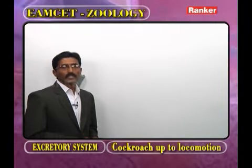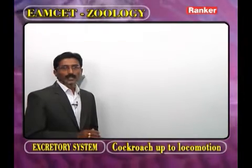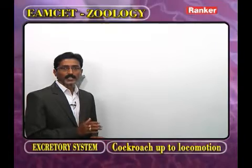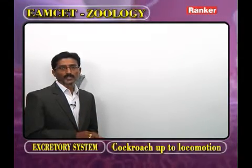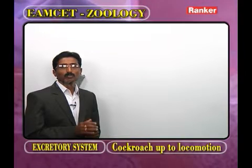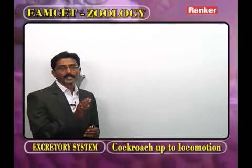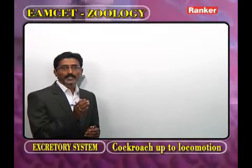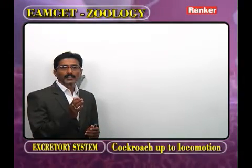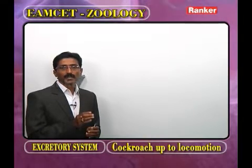Today we discuss the remaining part of Pheretima posthuma. In the last class, we discussed the introduction to the blood vascular system. The remaining systems associated with the body of Pheretima are: the nervous system, excretory system, reproductive system, and finally development. Let us discuss the nervous system of Pheretima.